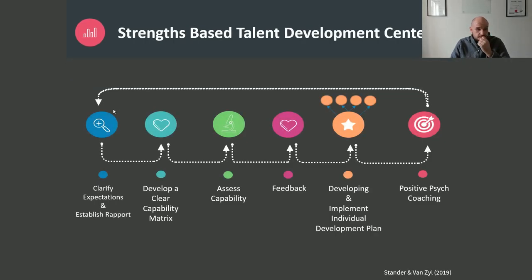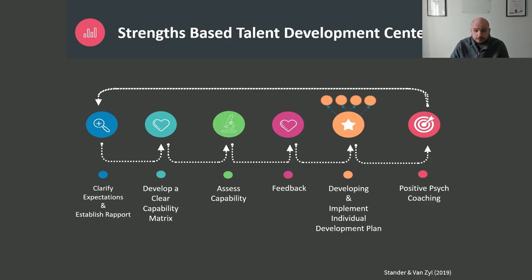The process is pretty straightforward. On a high level it involves six steps. We first clarify expectations and establish rapport with clients and executives. Then we develop our strengths-based capability matrix. From this, we assess leaders against the capability matrix using psychometrics, simulations, and interviews. Based on this combination, we provide feedback on what we saw. We then help them set up an individual development plan, coach them through the entire process, and repeat if needed.